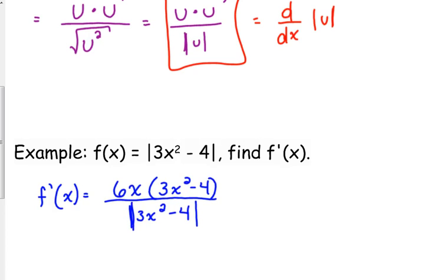And usually there's not really any simplifying to be done on these absolute value problems because you can't cancel the 3x squared minus 4 because one is inside absolute value and one is not. So you just kind of have to leave them there. You could distribute that out, but I'm not going to because what if I in turn asked you, what is f prime of negative 2? It's a lot easier if you don't cancel it, if you just plug it in.